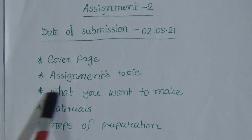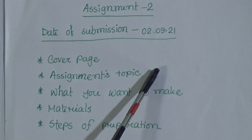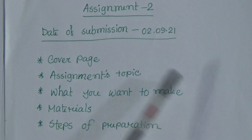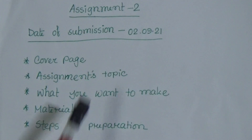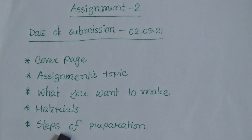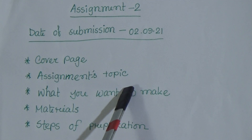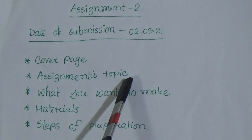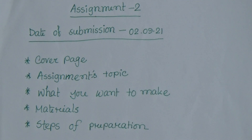And the assignment topic — for writing the assignment topic, you have to write the chapter's name, that means the chapter's number and the chapter's title. Like here, this is chapter 1, 'Pleasure at Work.' So in the assignment topic, you have to write: Chapter 1, Pleasure at Work.